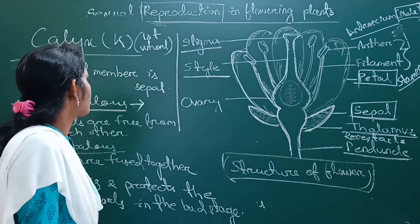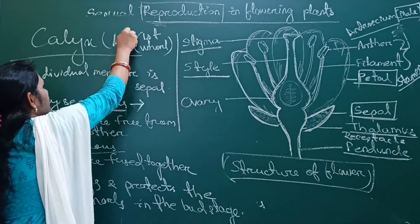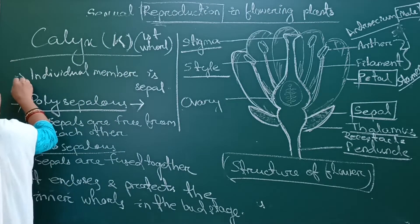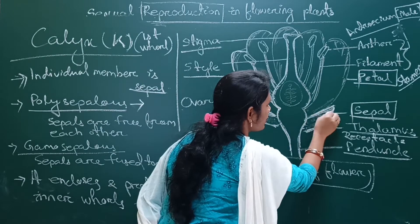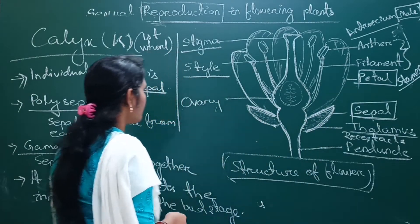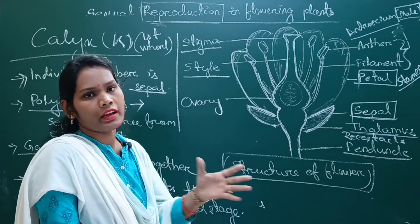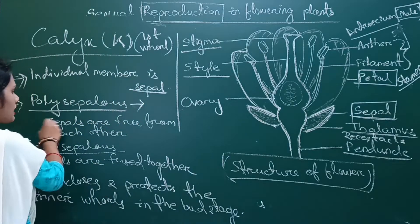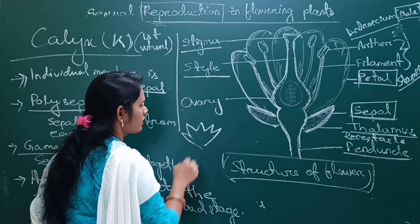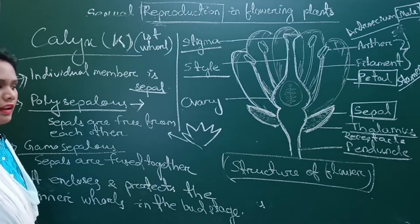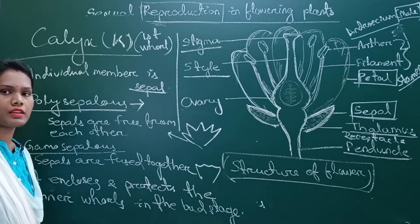Let us discuss the first whorl — calyx, symbolically represented as 'K'. Its individual member is called sepal. A group of sepals is called calyx. The flower may be polysepalous, where sepals are free from each other, or gamosepalous, where the sepals are fused together.